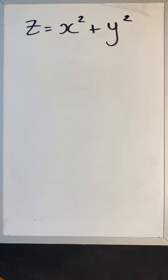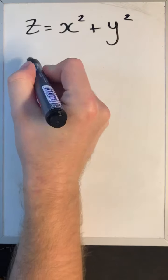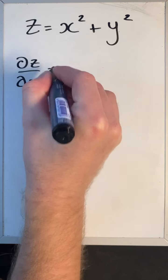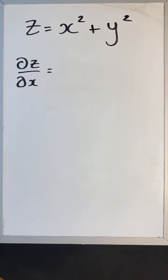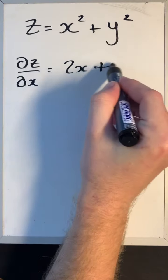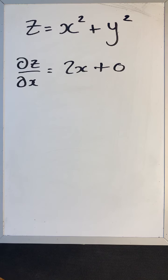One more example on first-order partial derivatives. For z = x² + y², finding ∂z/∂x: differentiate x² to get 2x. For y², since we're treating y as a constant and it's not multiplied by any x's, differentiating a constant gives zero. So ∂z/∂x = 2x.